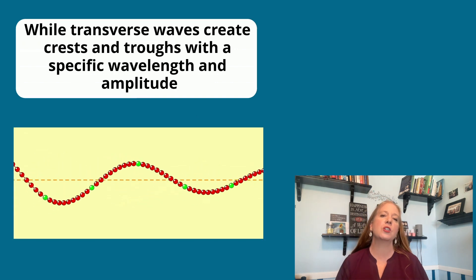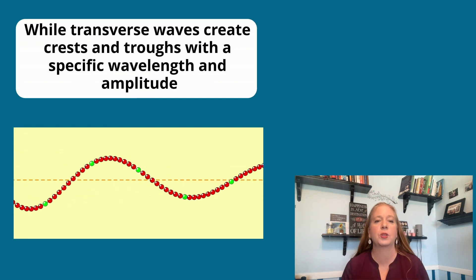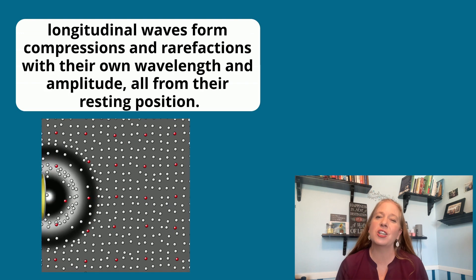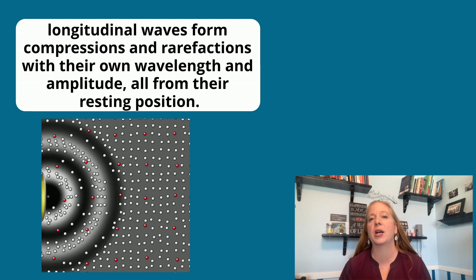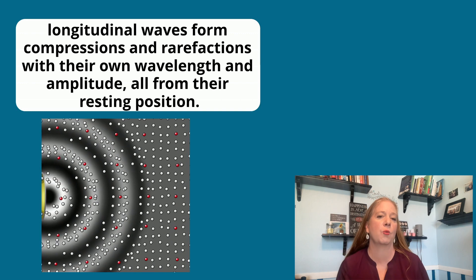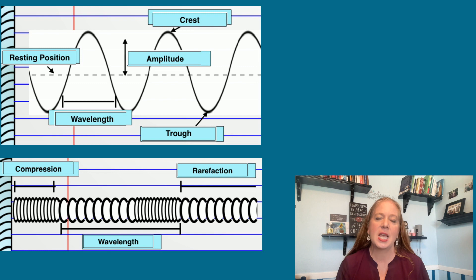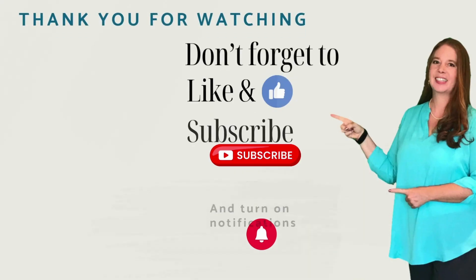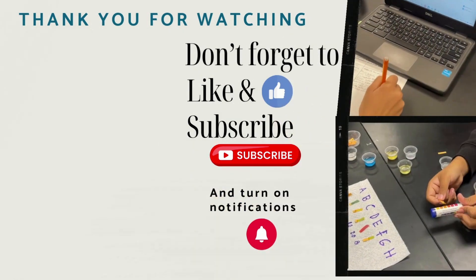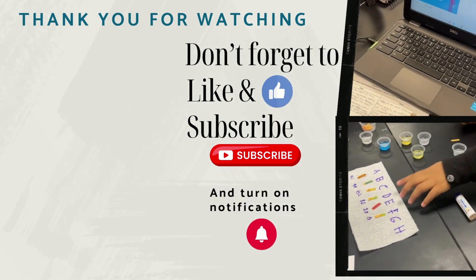While transverse waves create crests and troughs with a specific wavelength and amplitude, longitudinal waves form compressions and rarefractions with their own wavelength and amplitude, all from their resting position. Now these parts of a wave help us determine the wave's properties of frequency, speed, and energy.